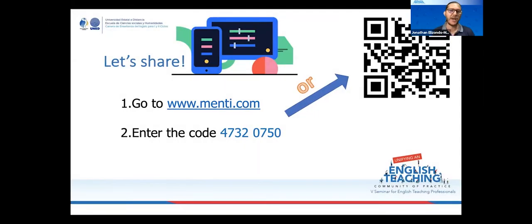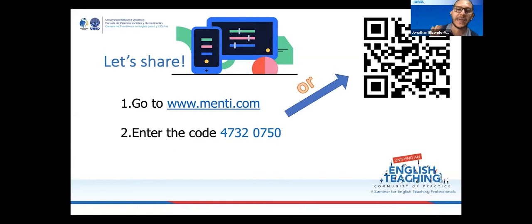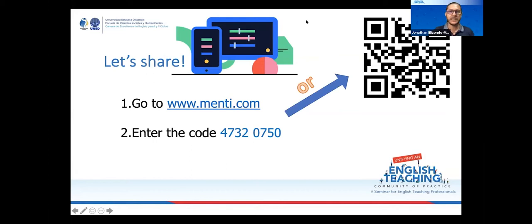Let's begin by doing some Mentimeter. I want you to share some of your ideas. Here you have a QR code — if you have a phone, scan it and it will take you directly to the Menti. Or you can go online and type www.menti.com. The code is 47320750. I'm going to share the Menti in a moment. This tool is one I really like because it's totally anonymous. People don't have to worry about me knowing who they are by name, but I really want to know the whole audience a little bit more. I encourage you to use it with your students as well — they are going to like it a lot.